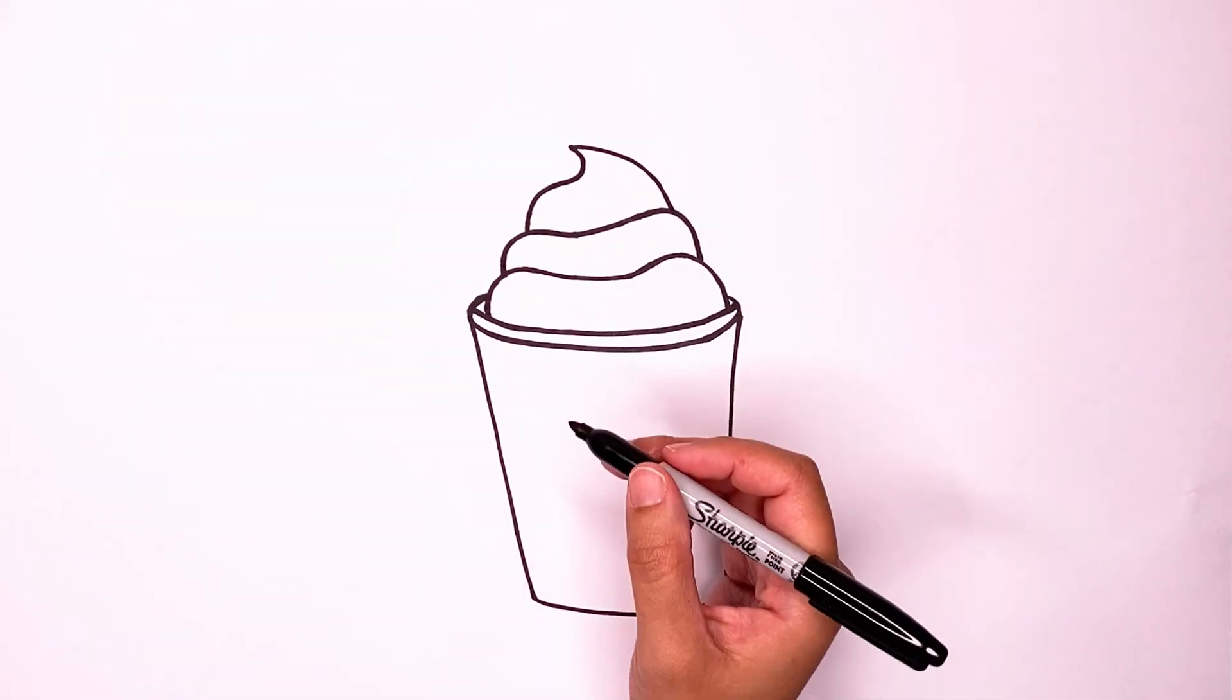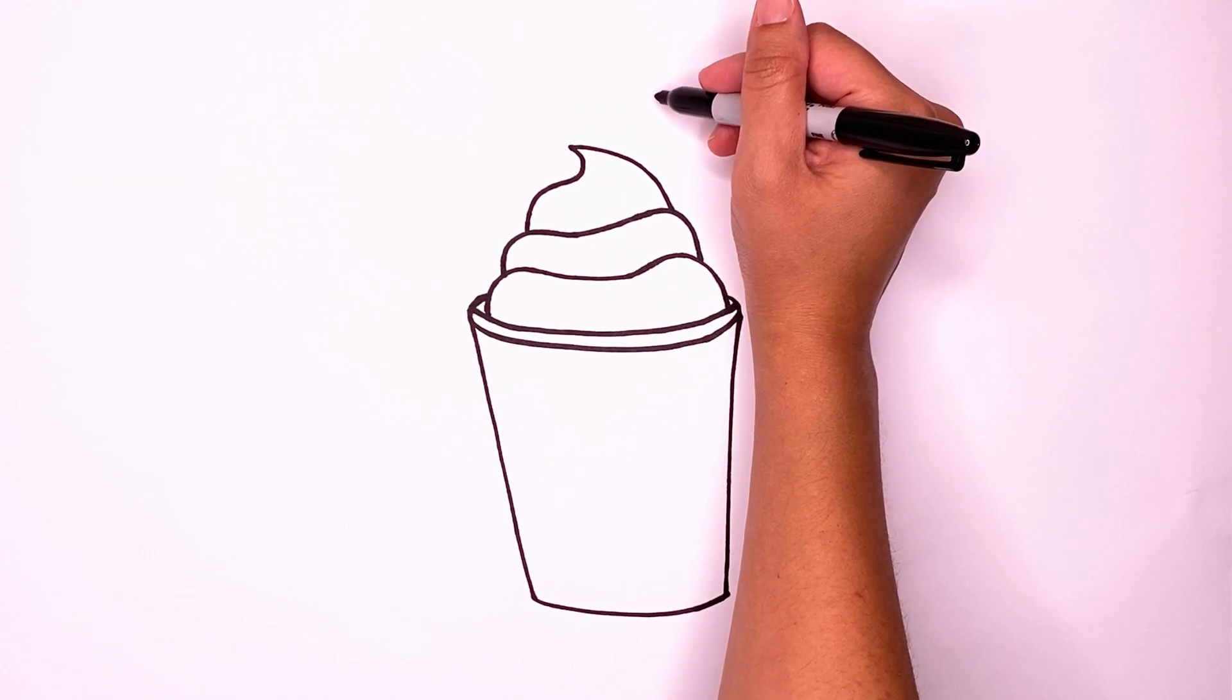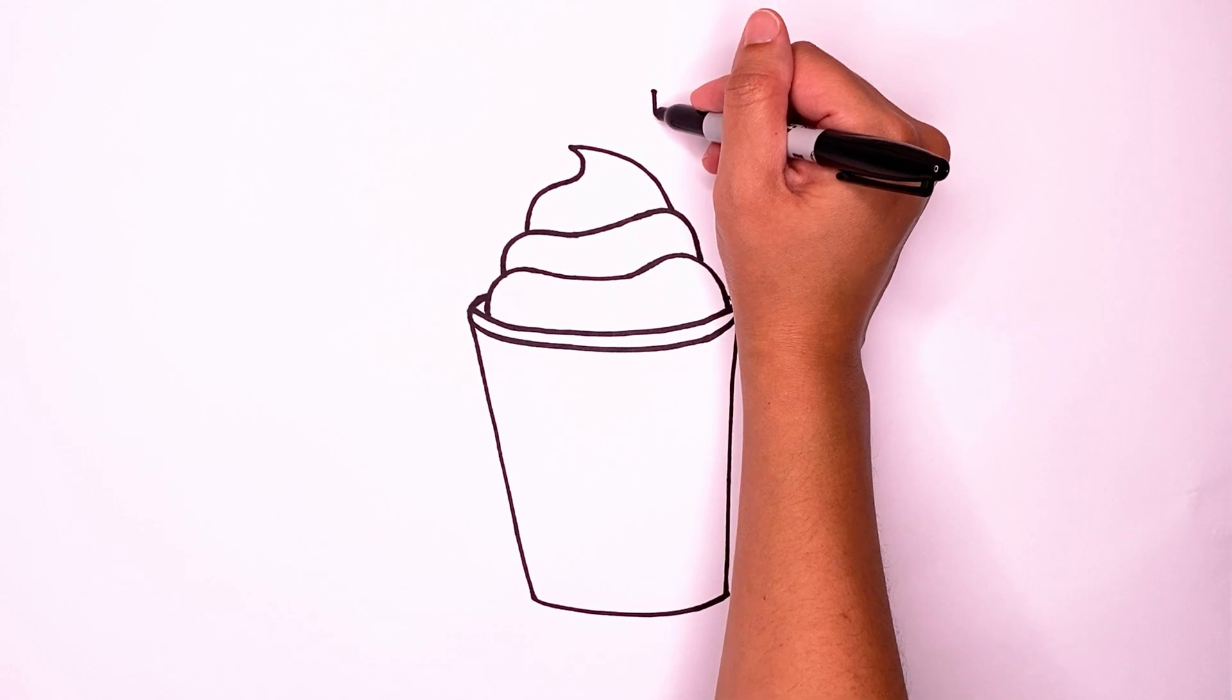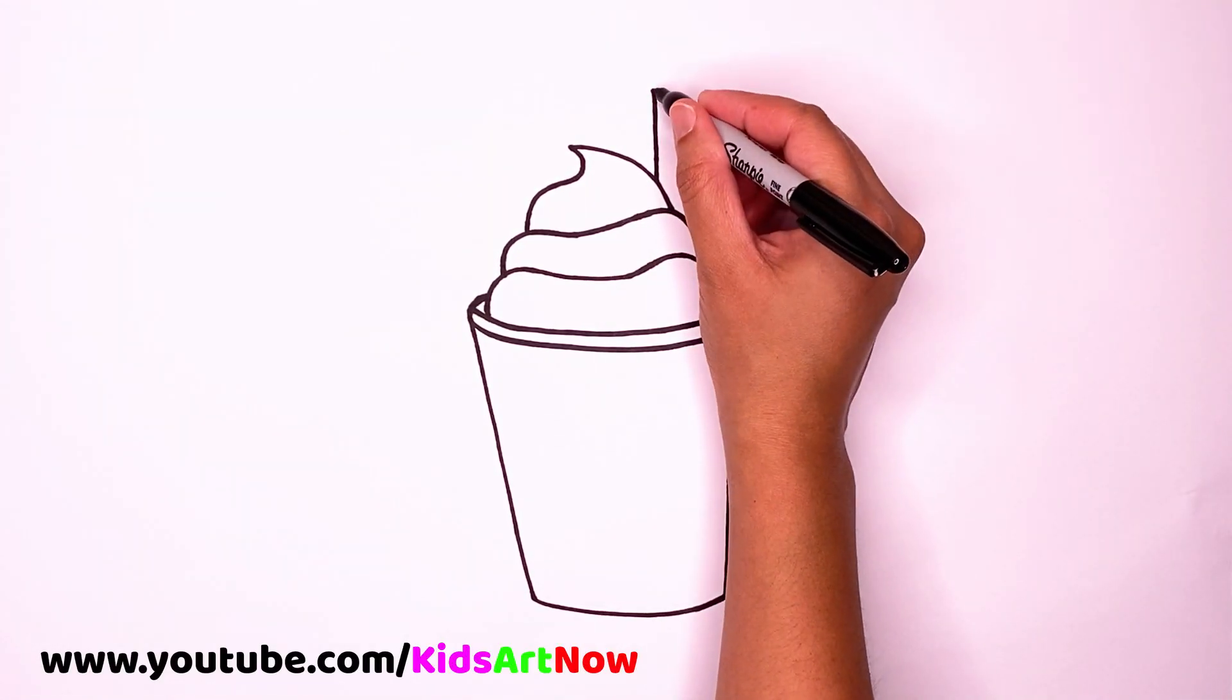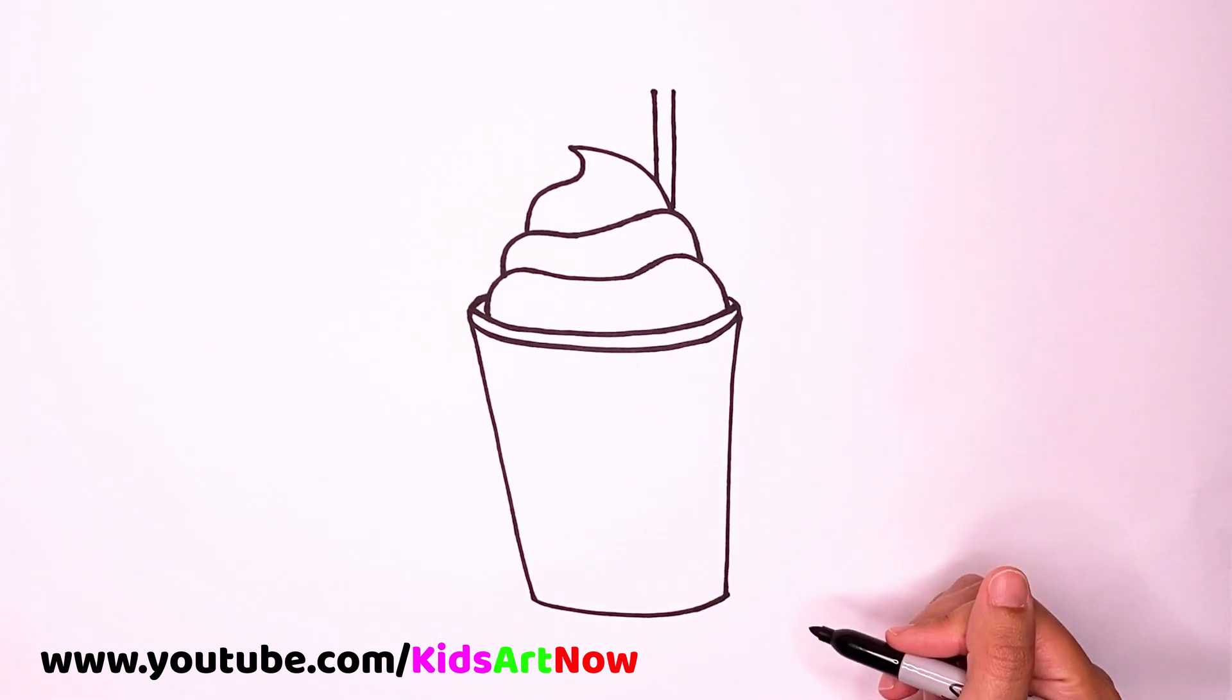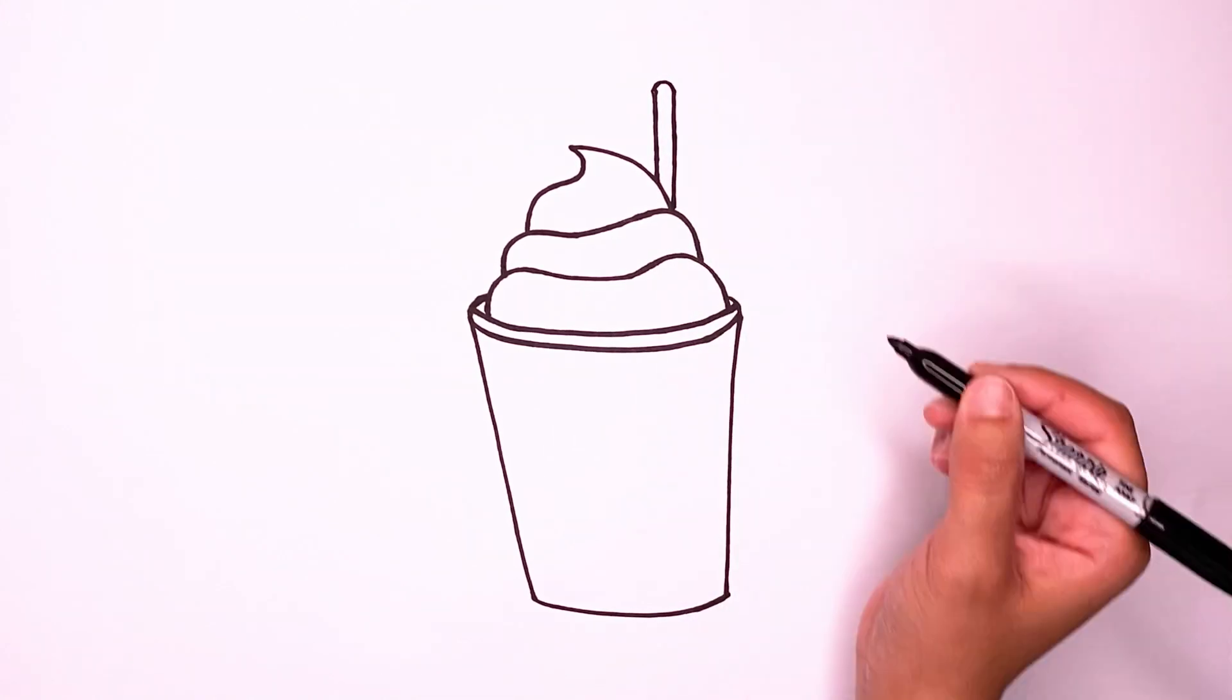We're going to draw a straw. Our straw is going to start about here, or wherever you want yours, and go down and in again. And then curve it up at the top.